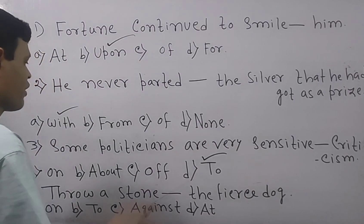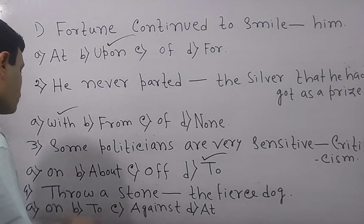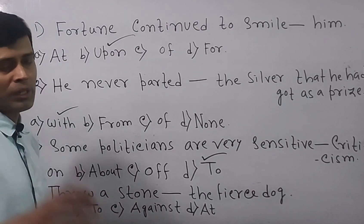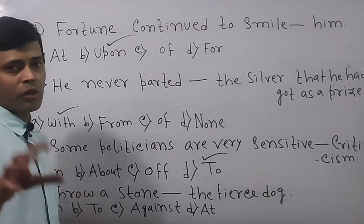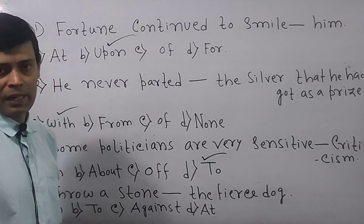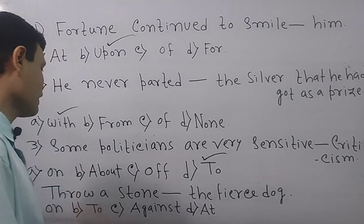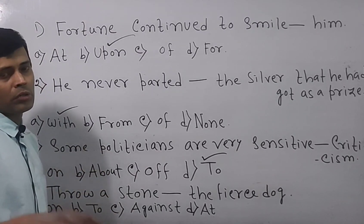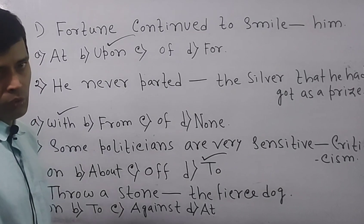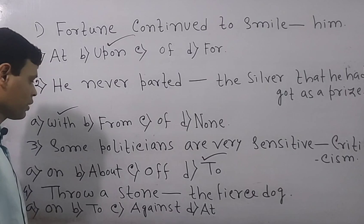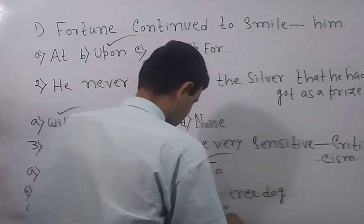Now go next. Throw a stone dash the fierce dog. Options are on, to, against, at. So whenever you are going to throw something for hurting purpose, you need to select the preposition at. So here the stone is thrown for the purpose of hurting the dog or injuring the dog. So out of the four options, at is the perfect answer.